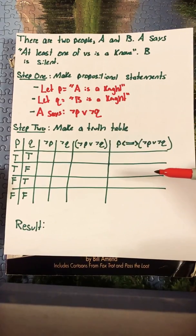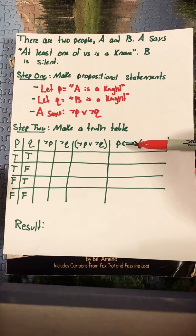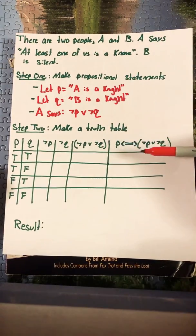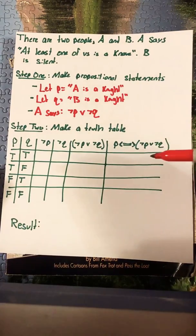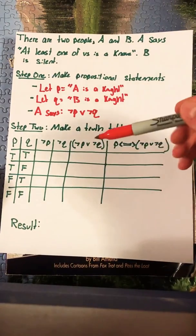In order to solve a Knights and Knaves problem we're going to use the biconditional where we use what A said and A is P and we're going to compare it. Now we're going to fill out the truth table.